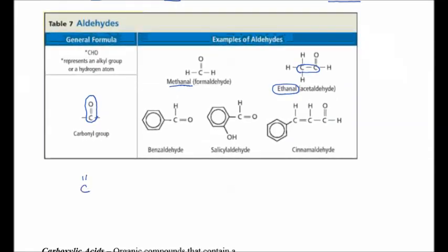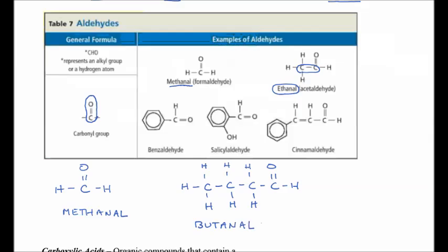If we have one carbon with a double-bonded O, it is called methanol. If we have four carbons with a double-bonded O, which has to be on the end carbon, the prefix for four carbons is but, so it came from butane. This is called butanil. We don't have to call it one butanil because it has to be on the first carbon.